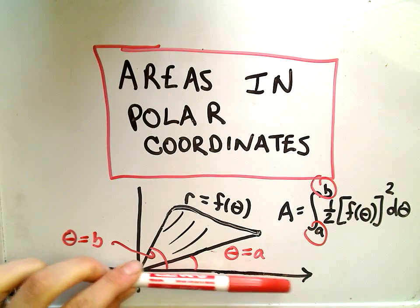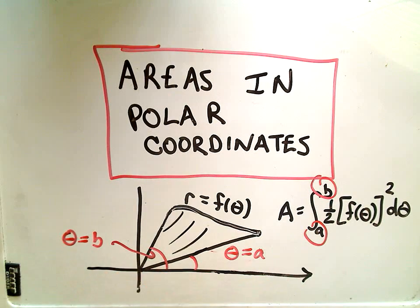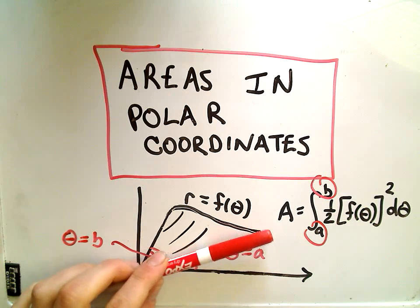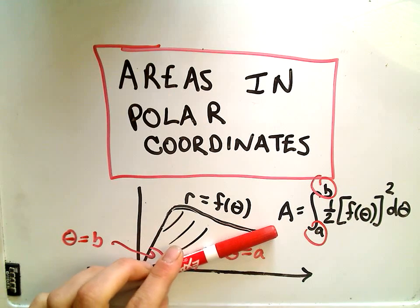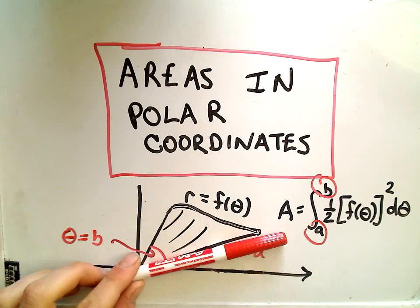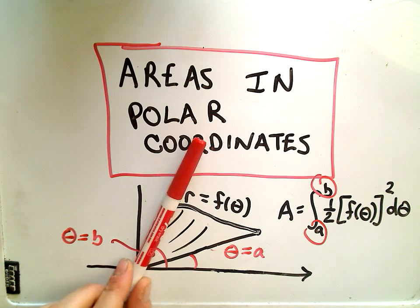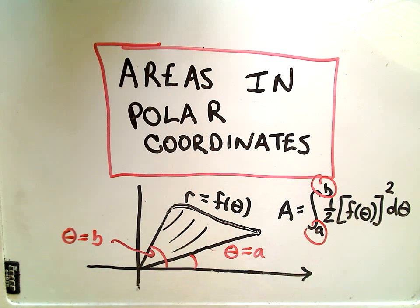In this case, the limits of integration correspond not to these rectangular intervals like when we do normal integration, but now our limits of integration are going to be angles. Suppose it starts at the angle theta equals a and goes to the angle theta equals b. Those are going to be my limits of integration.